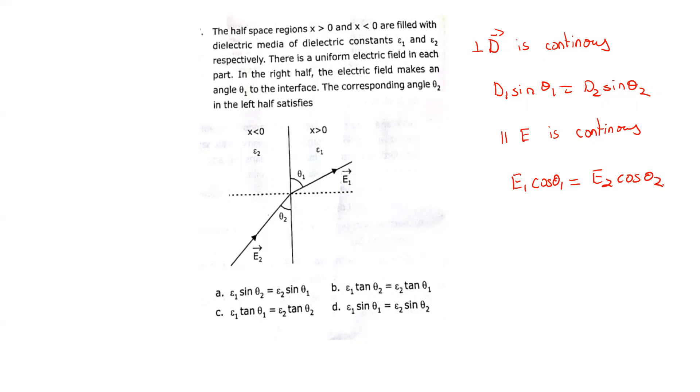Let's call this equation 1 and this equation 2. I can use the relationship between D and E: D = εE. So I can write this as ε₁E₁ sin θ₁ = ε₂E₂ sin θ₂. This is equation 1.